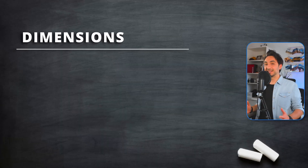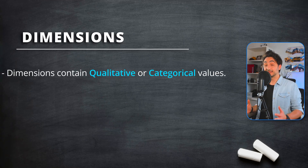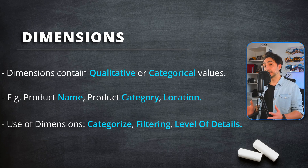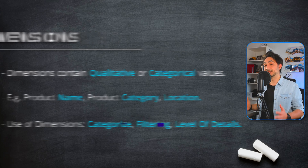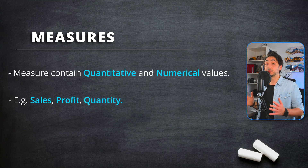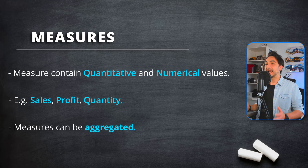To summarize: dimensions contain qualitative values — they describe something like product name, product category, or customer location. We use dimensions to categorize, filter, and show the level of detail. Measures, on the other hand, contain numeric quantitative values that can be measured. Unlike dimensions, measures can be aggregated.